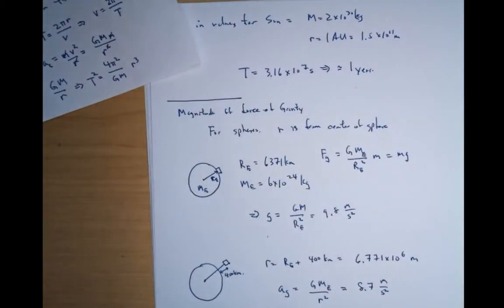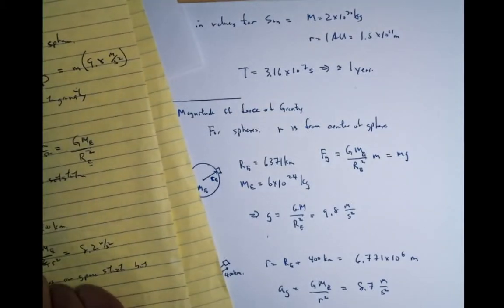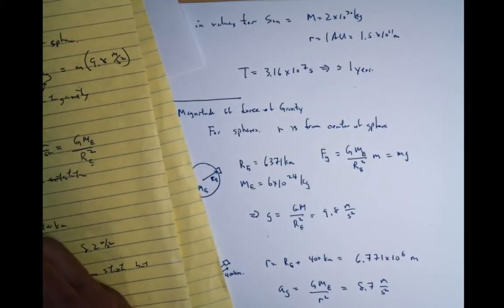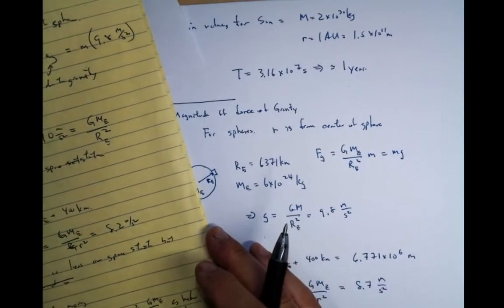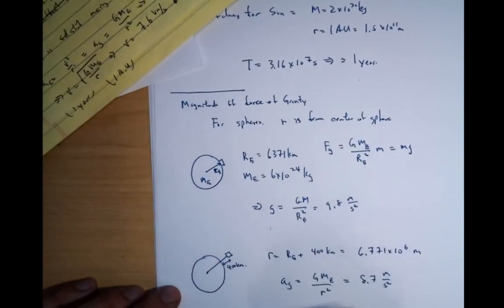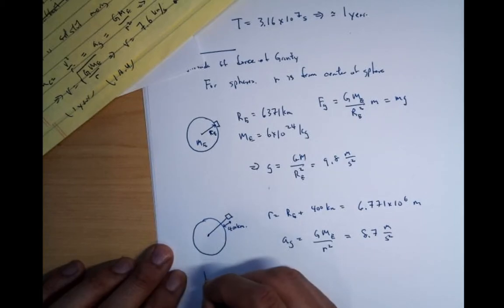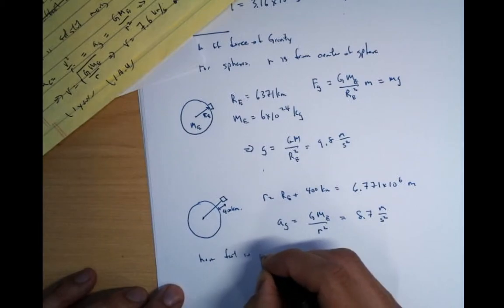So if you're orbiting above the earth and you slightly stop yourself, and you put a table there, you would feel less gravity because you're further away. So now basically we can figure out how fast the satellite is moving.